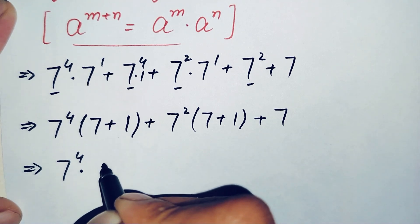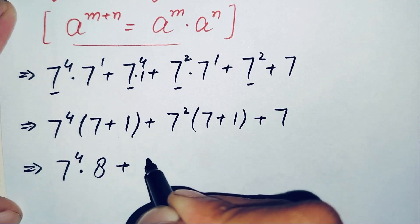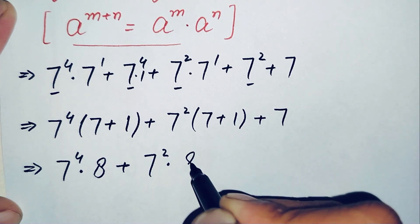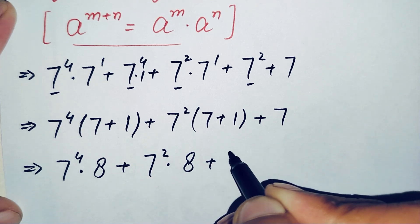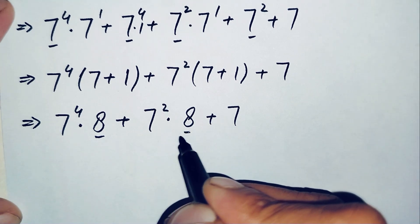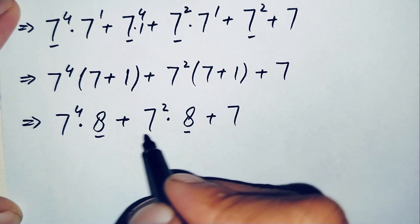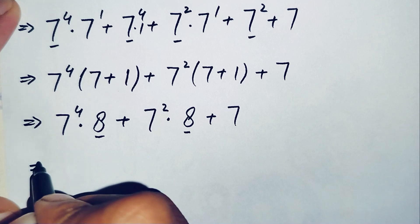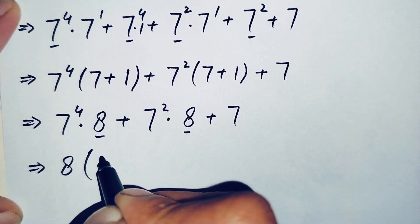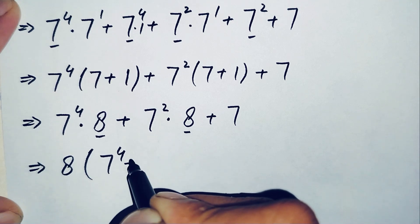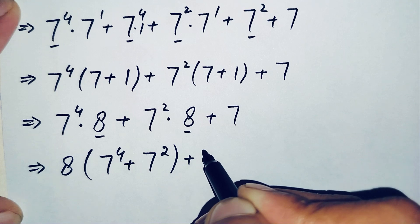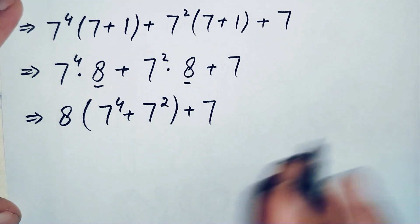Adding seven plus one gives eight in both brackets. Since eight is common in both terms, we factor it out, giving us eight times the quantity seven raised to power four, plus seven raised to power two, plus seven.